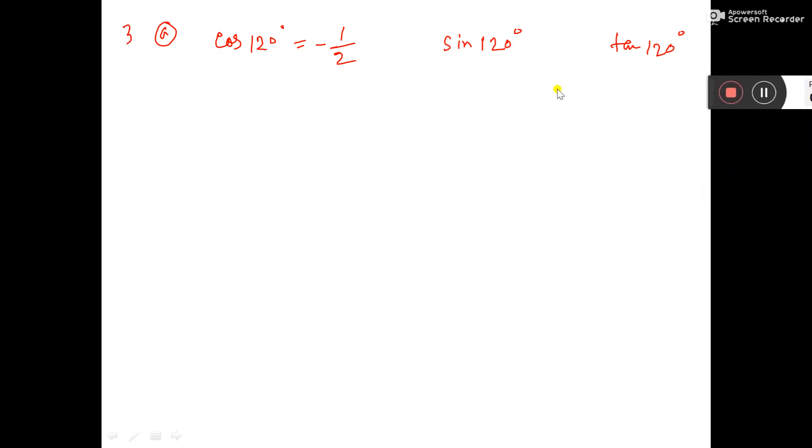See, cos 120° given minus half. This is the information that 120° means - where is it falling?